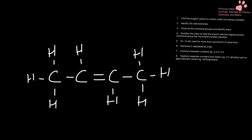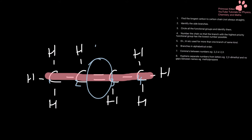Here we have an alkene. I'm going to identify my longest carbon chain and highlight it. We have our double bond in the middle, so I'm just going to number it: one, two, three, four. Here is my functional group — it is on carbon number two. Remember, we're looking for the lowest possible numbers. So, this is 'but' because it has four carbons, 'two' because that's where the functional group is, and 'ene' — but-2-ene.